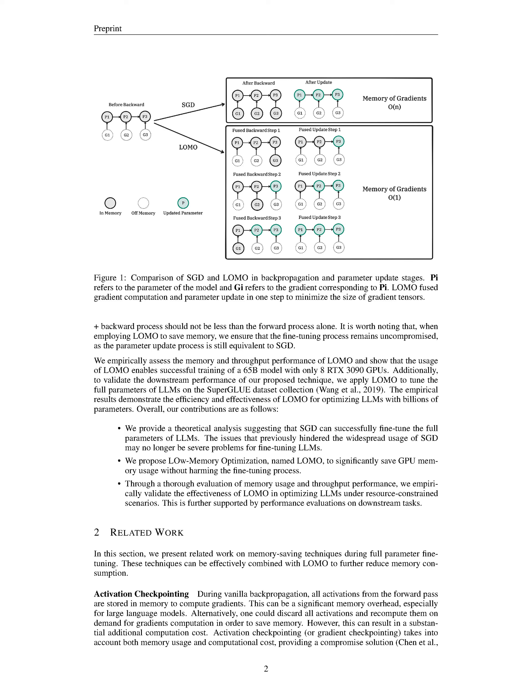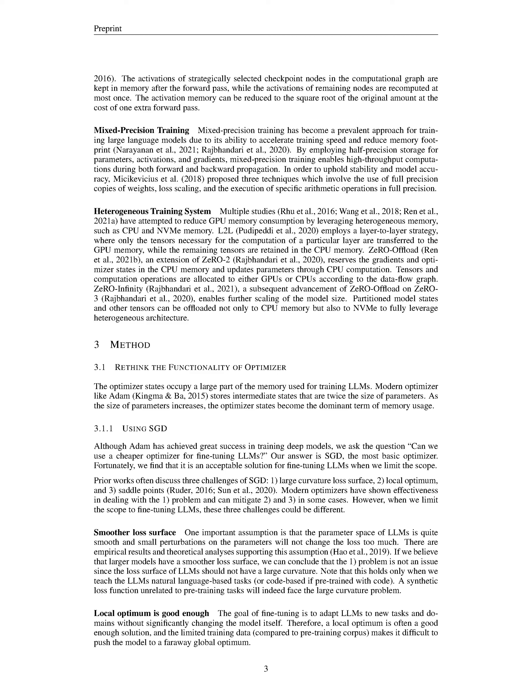This segment discusses earlier research on techniques aimed at saving memory during the comprehensive fine-tuning of parameters. We can use these methods in conjunction with LOMO to further lessen memory usage. One such technique is activation checkpointing. In the standard backpropagation method, all activation values from the forward pass are kept in memory to calculate gradients. This can lead to considerable memory usage, particularly with larger language models.